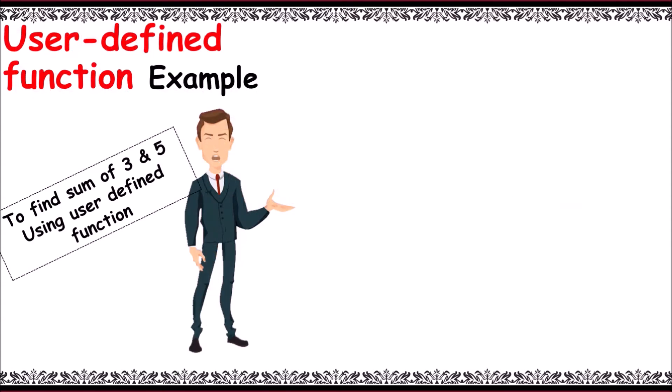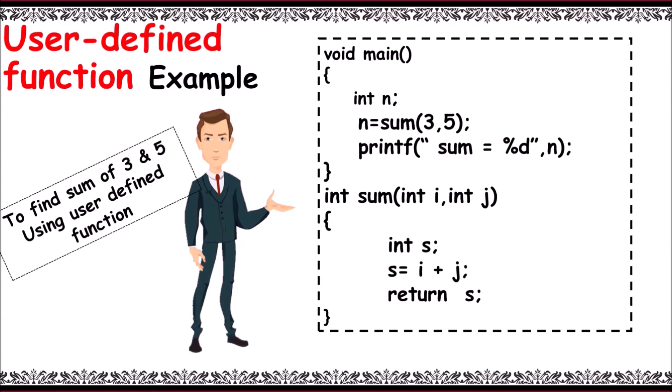Now, let us write a sample program to demonstrate the basic use of user-defined functions. Here we go. Main, and next we declare n. n equals sum of 3 comma 5.